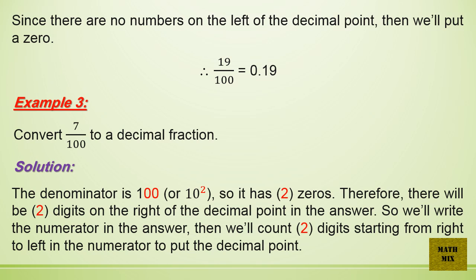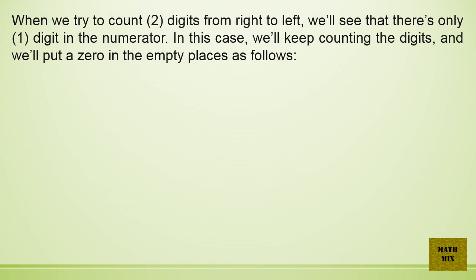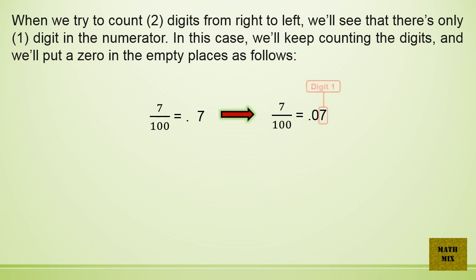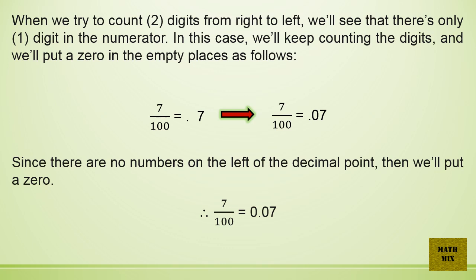Example 3: Convert 7 over 100 to a decimal fraction. The denominator is 100, or 10 squared, so it has two zeros. Therefore, there will be two digits on the right of the decimal point. We write the numerator, then count two digits from right to left. When we try to count two digits, we see there is only one digit in the numerator. In this case, we keep counting and put a zero in the empty places. So 7 over 100 equals 0.07.